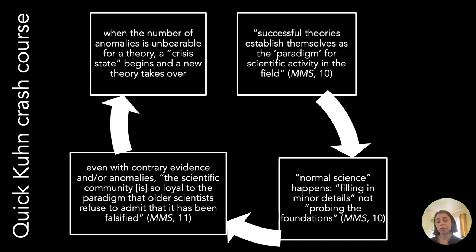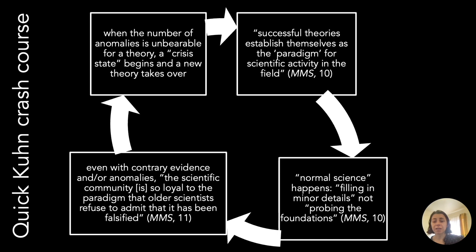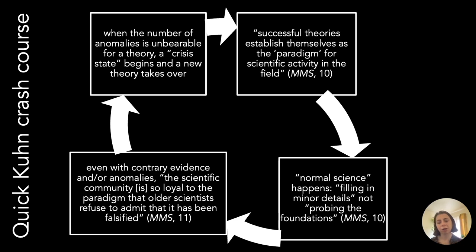Finally, when the number of anomalies has become unbearable for a theory, it enters what Kuhn calls a crisis state. Then, often, a new theory comes about and takes over. Once this new theory takes over, we restart the cycle and this new theory becomes the successful theory. So in summary: a successful theory establishes a paradigm, normal science fills in details, contrary evidence gets ignored until a crisis state occurs, a new theory develops to take over from the old one, and then rinse and repeat.